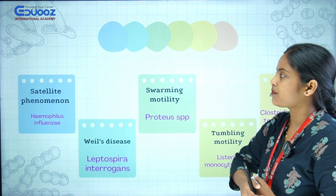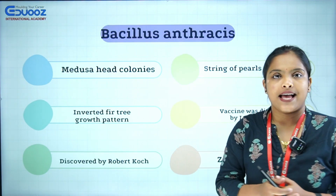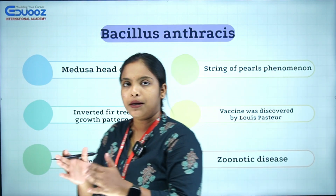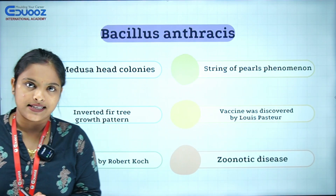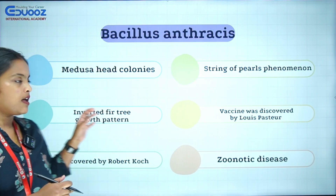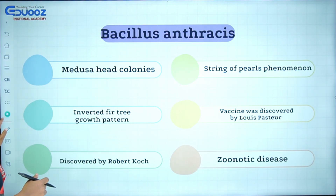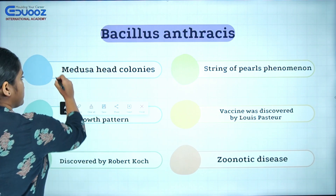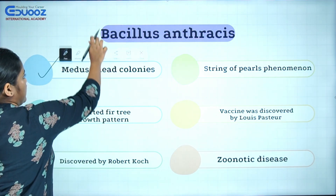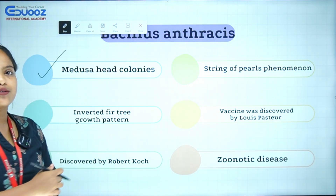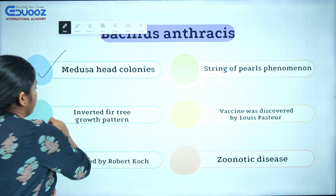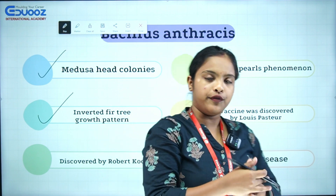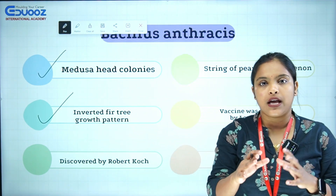Next: Bacillus anthracis. Bacillus anthracis has a Medusa Head Appearance colony. Also, it shows an Inverted Fir Tree growth pattern — like a Christmas tree appearance in a stab tube.